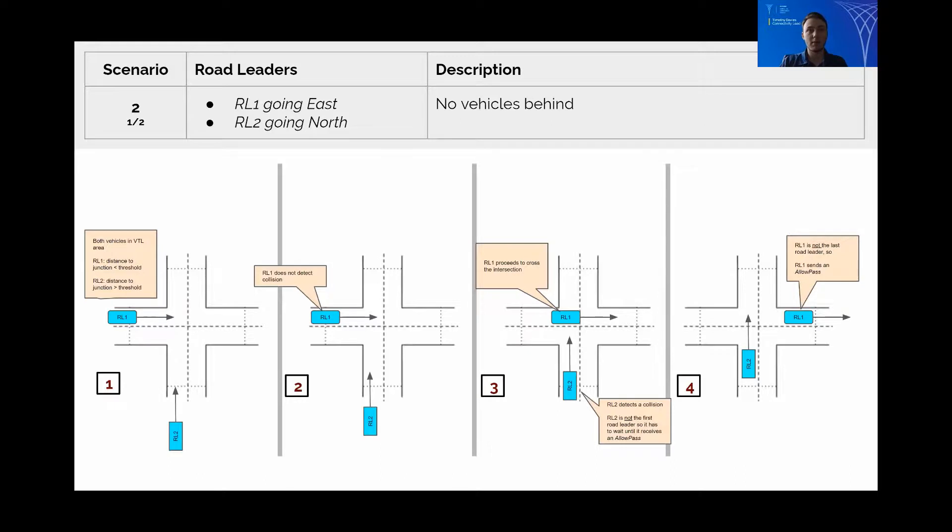Once they're within the required distance from the junction they will compute the neighbouring road leaders and their paths. Road Leader 1 figures out that it's closer to the intersection than Road Leader 2. Road Leader 1 continues through. It doesn't detect a collision, so it crosses the intersection.